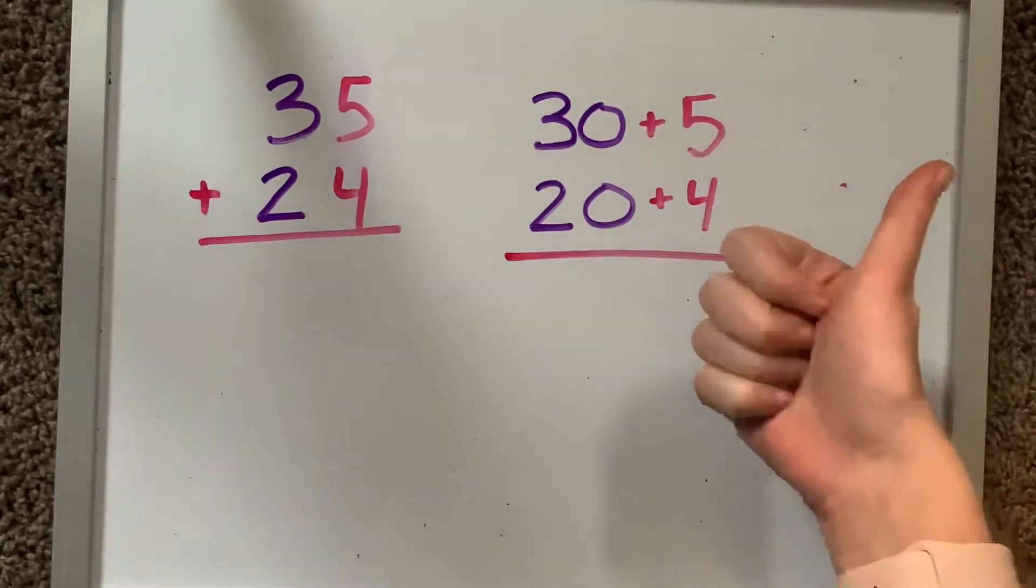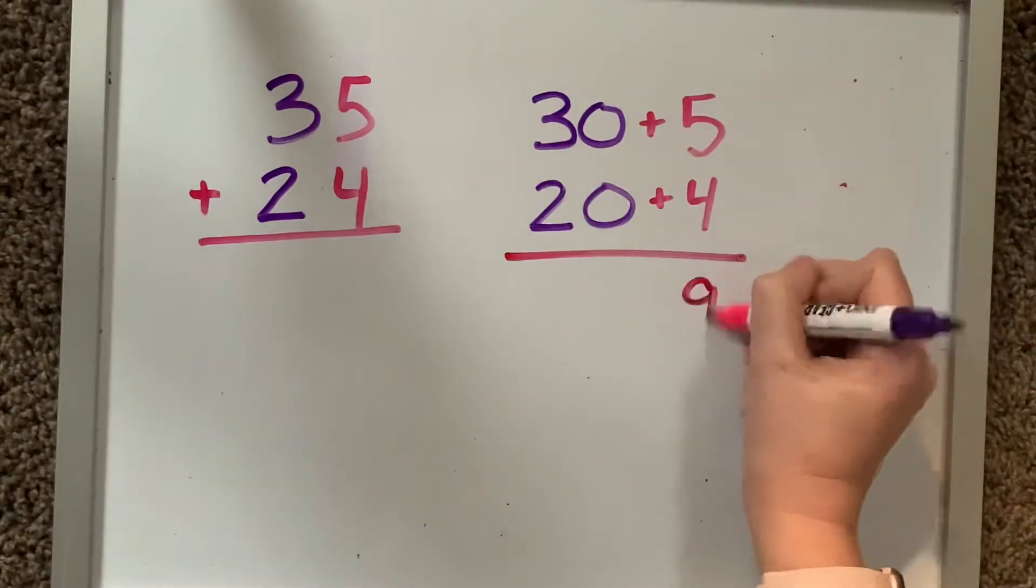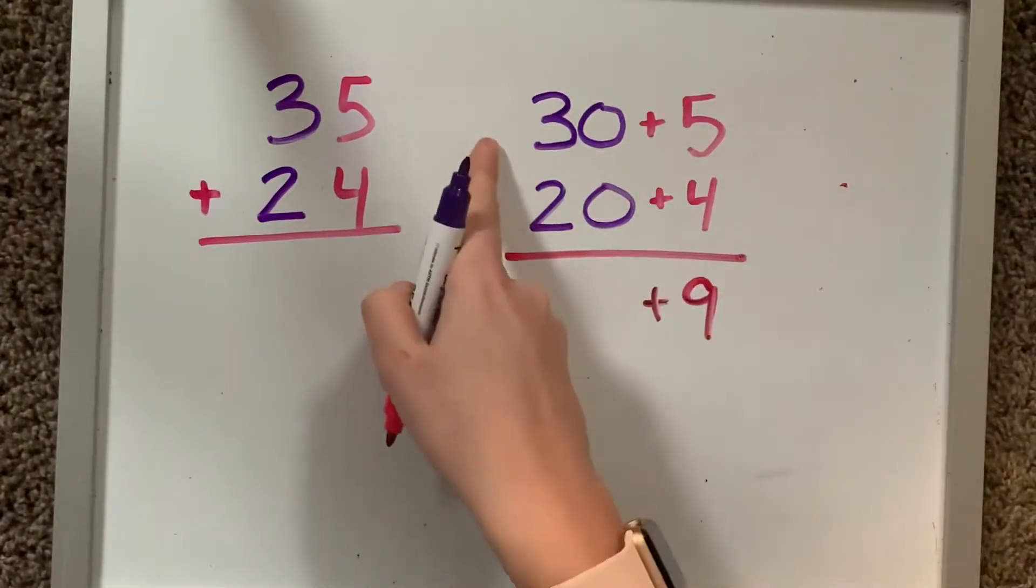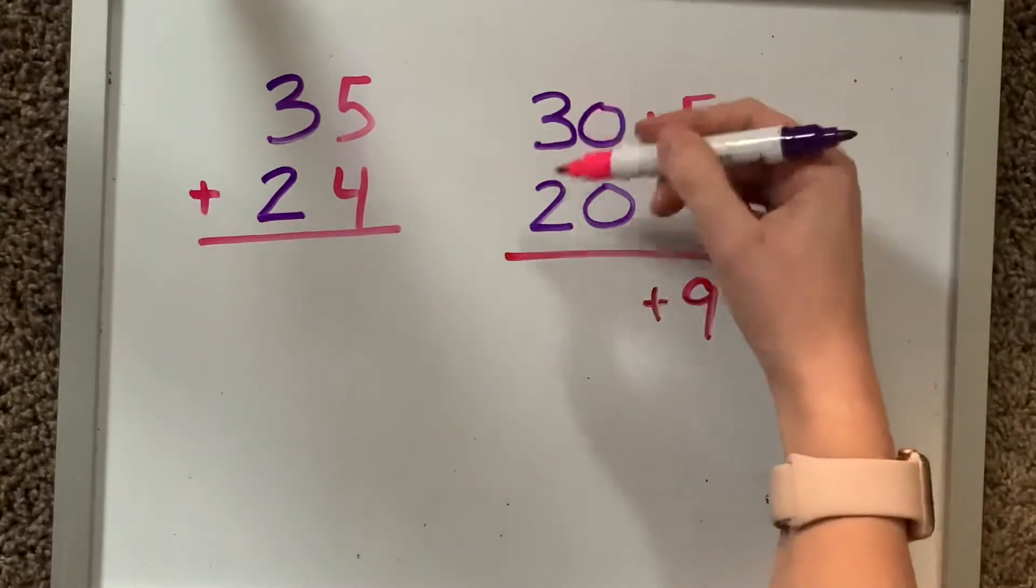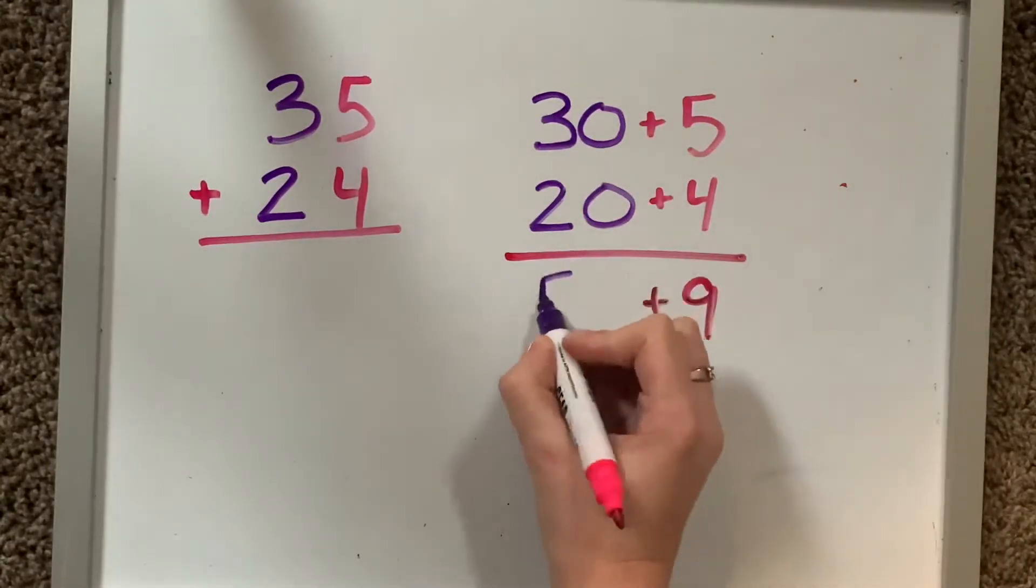Well, we know that. 5, 6, 7, 8, 9. And 30 plus 20. Well, 30, 40, 50. I want to make sure it's purple.